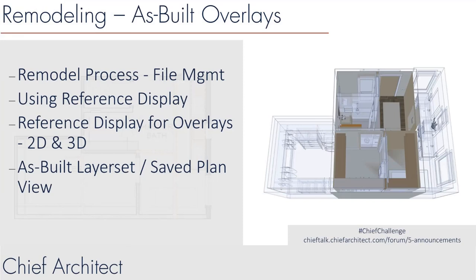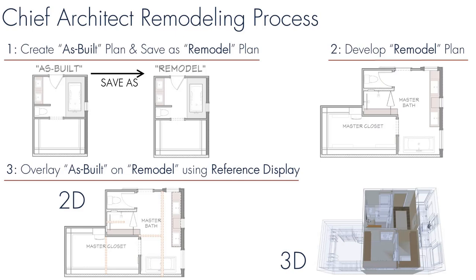Let's step back and review the process of remodeling in the program. As you begin a project, you'll go out and get your measurements and save that file as the as-built. Once measurements are complete, save that file as the remodel project. Since those two files begin in the same coordinates, it'll be easy to overlay them. As you modify the remodel project, you can assign the overlay back to the as-built in both 2D and 3D. It's important that the two files share the same origin so coordinates align — that's what allows this reference display technique to work.